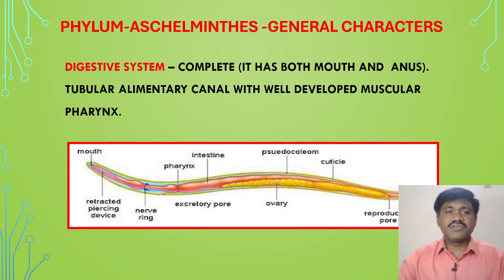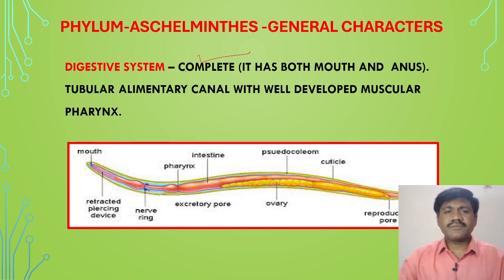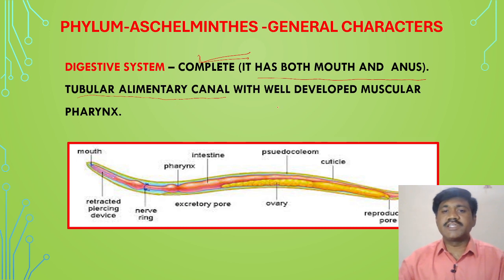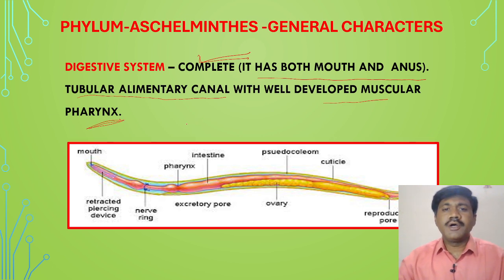The digestive system: a complete digestive system is observed from Aschelminthes onwards. In Platyhelminthes there was an incomplete digestive system, but here in Aschelminthes a complete digestive system is present with both mouth and anus — that is why it is called a complete digestive system. A tubular alimentary canal is present, making these tube-within-tube animals, since the body is cylindrical and the tubular alimentary canal runs inside it.